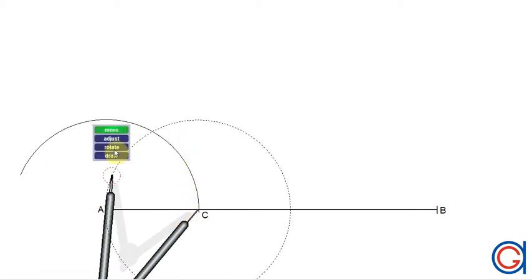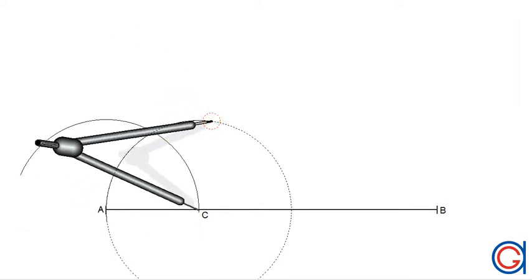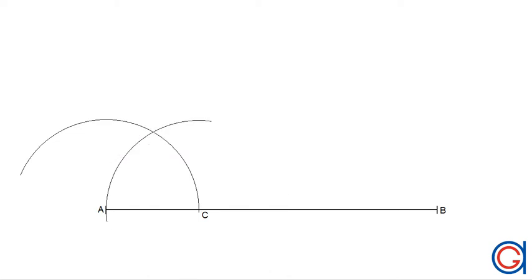Now, we set our compass on this new point C and we scribe an arc to the left, cutting our previously drawn arc. And where these intersect, we have a new point D.